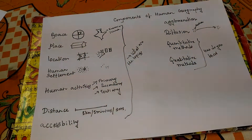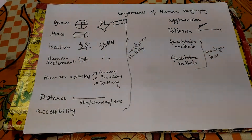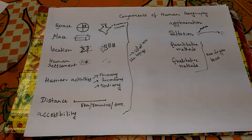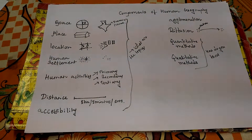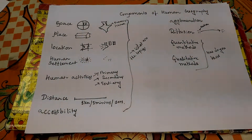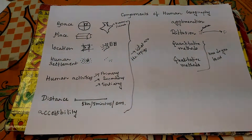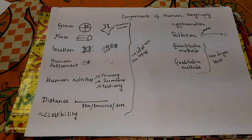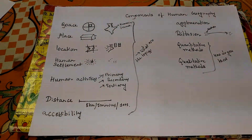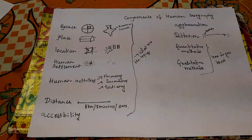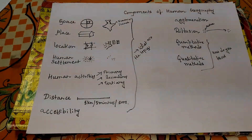The first component of human geography is space. Space can be divided into two parts: objective and subjective. Objective space is homogeneous by nature and is perceived equally by people. Subjective space, however, depends on attributes — it varies from one person to another depending on the context in which they understand it. For example, when talking about India, it is an objective space everyone understands equally.